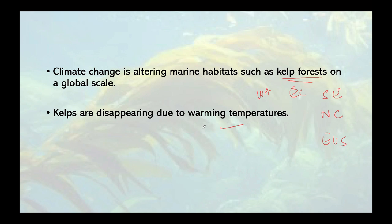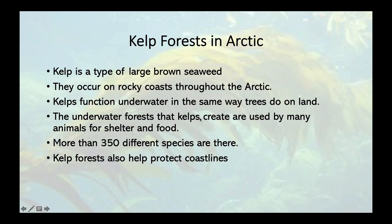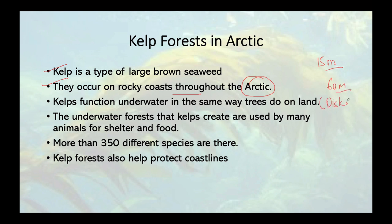What are Arctic kelp forests? Kelp is a type of large brown seaweed that grows in shallow, nutrient-rich saltwater near coastal fronts around the world. They occur on rocky coasts throughout the Arctic region. The longest kelp recorded in the Arctic, in Canada, was 15 meters, and the deepest was found at 60 meter depth in Discovery, Greenland.